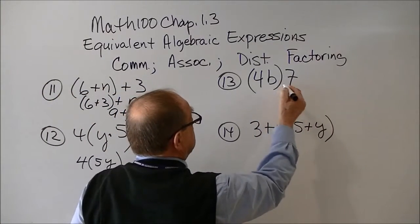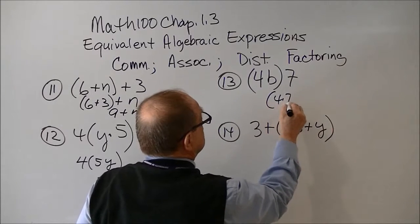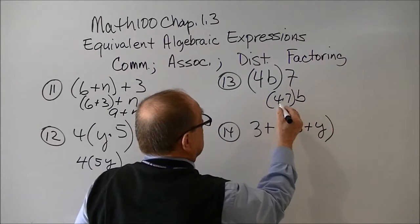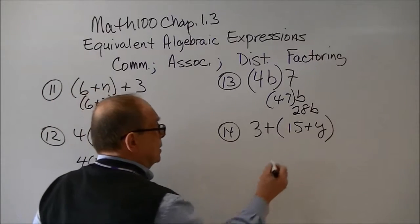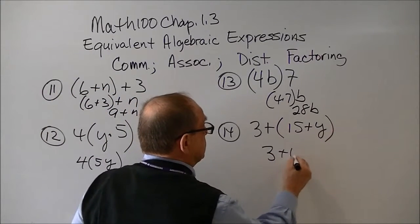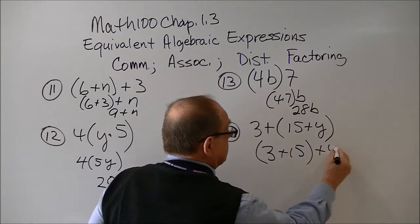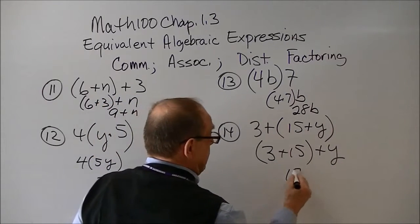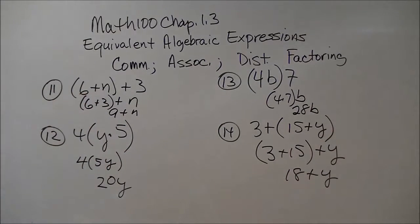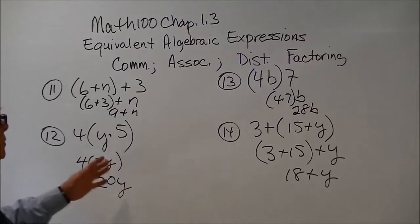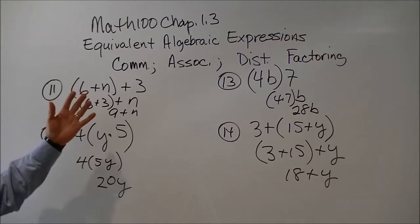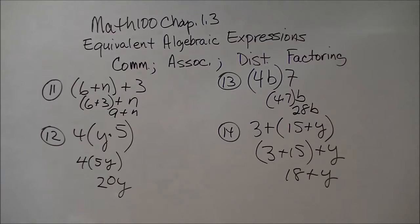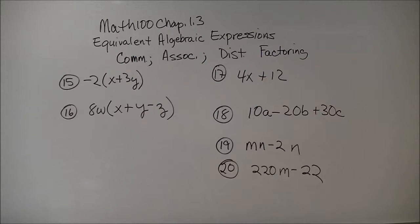Now here, again, we're switching the 7 and the 4: 4 times 7b. So 4 times 7 is 28b. And here we're going to regroup 3 plus 15 plus y. And that's an 18 plus y. And these are skills we often take for granted and we just do them normally. But the rules are there, and it's legal to do that.